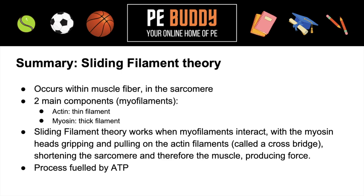So there you have it. Here's a quick summary of the sliding filament theory. This occurs within a muscle fiber in the sarcomere. The two main components, or myofilaments, are actin — our thin filaments — and myosin — our thick filaments. The sliding filament theory works when the myofilaments interact: the myosin heads gripping and pulling on the actin filaments, just like rowing, and this is called a crossbridge. This shortens the sarcomere, and therefore the muscle, producing force and movement. And this whole process is fueled by ATP.